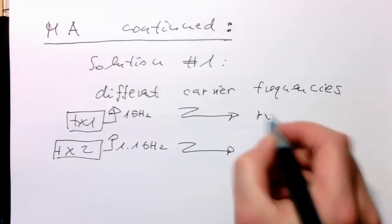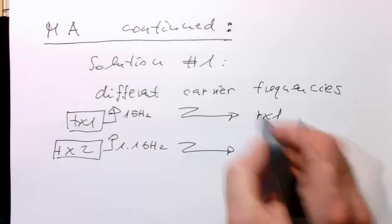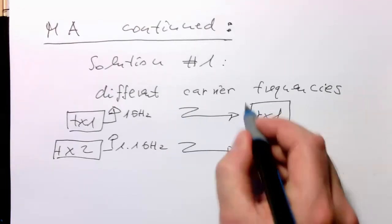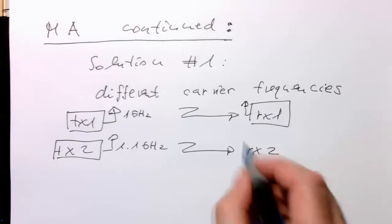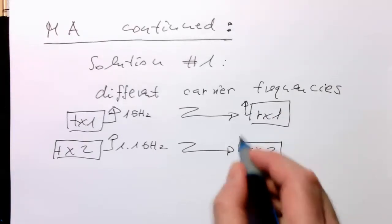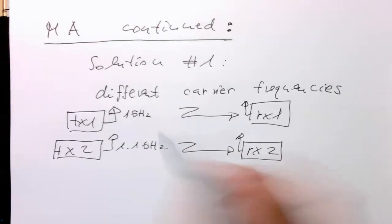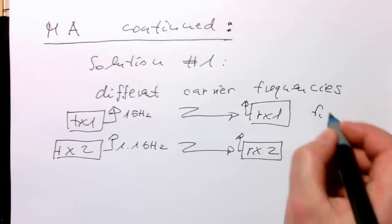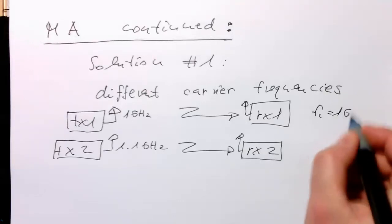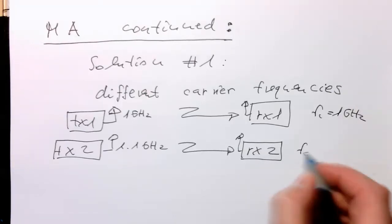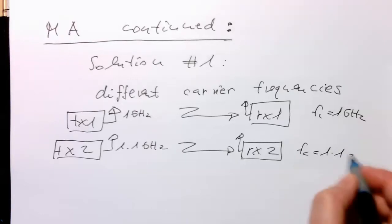We have RX1, that's a receiver here, and then RX2, that's a receiver. We just use different carrier frequencies. Here FC is 1 GHz, and here FC is 1.1 GHz.